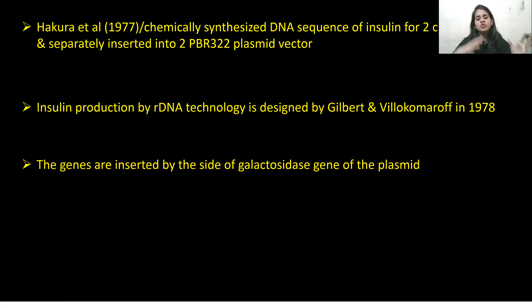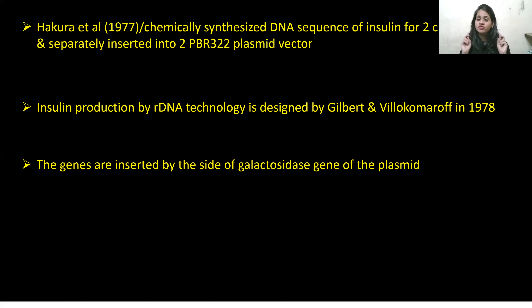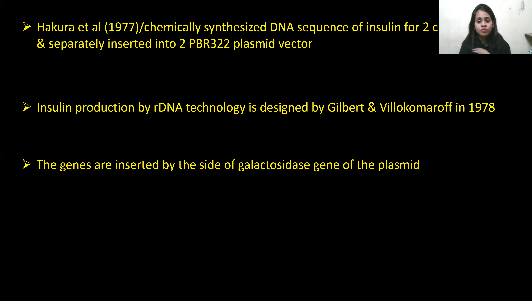To summarize this video: pro-insulin is made up of three chains, while insulin is made up of just two chains. Eli Lilly Company was the one who prepared human insulin called Humulin. These are the two things you cannot afford to forget for your NEET exams, and the entire topic can be asked in board exams as well. I hope you've understood the video. I'll meet you soon with the next video — till then, bye, take care, study hard, and work for your dreams.